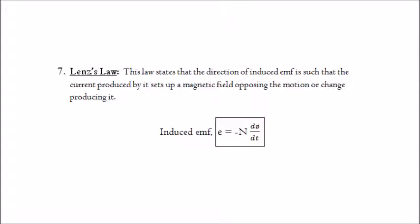7. Lenz's law. This law states that the direction of induced EMF is such that the current produced by it sets up a magnetic field opposing the motion or change producing it. Therefore the induced EMF is given by: e equals minus N · dφ/dt.